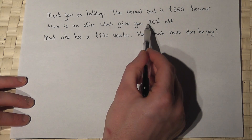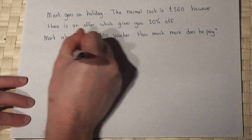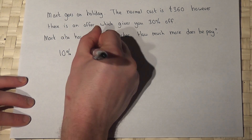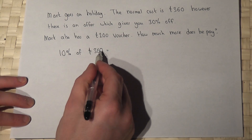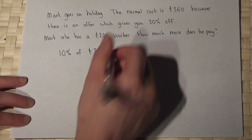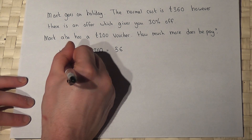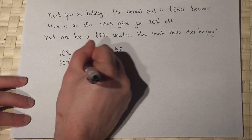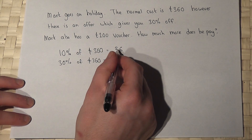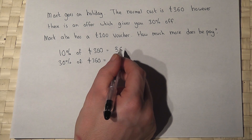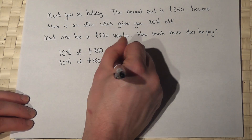Let's first of all find out this discount. We know that 10% of £360 is just £360 divided by 10, which is £36. So to find 30% of £360 we just times this value by 3. So 36 times 3 is just £108.